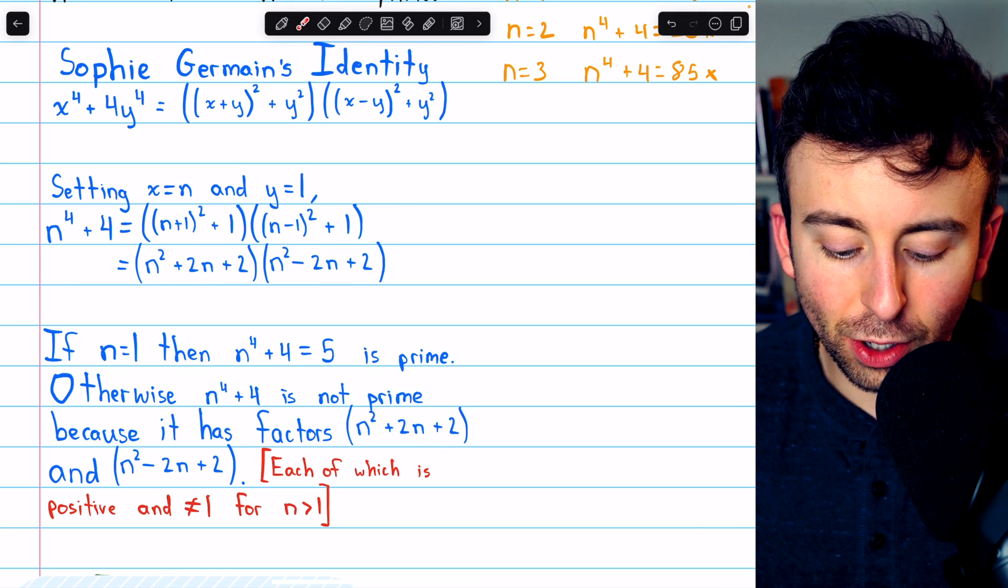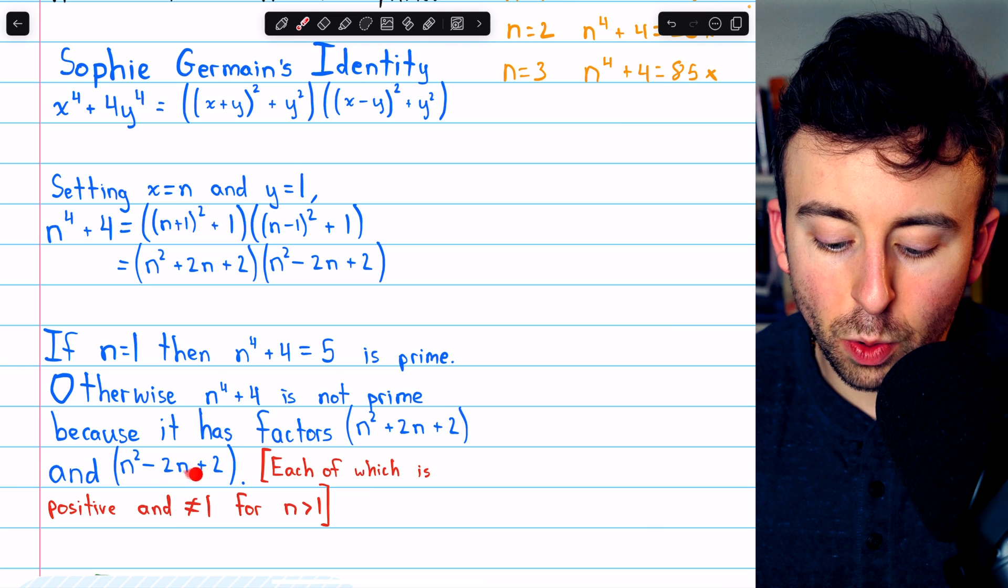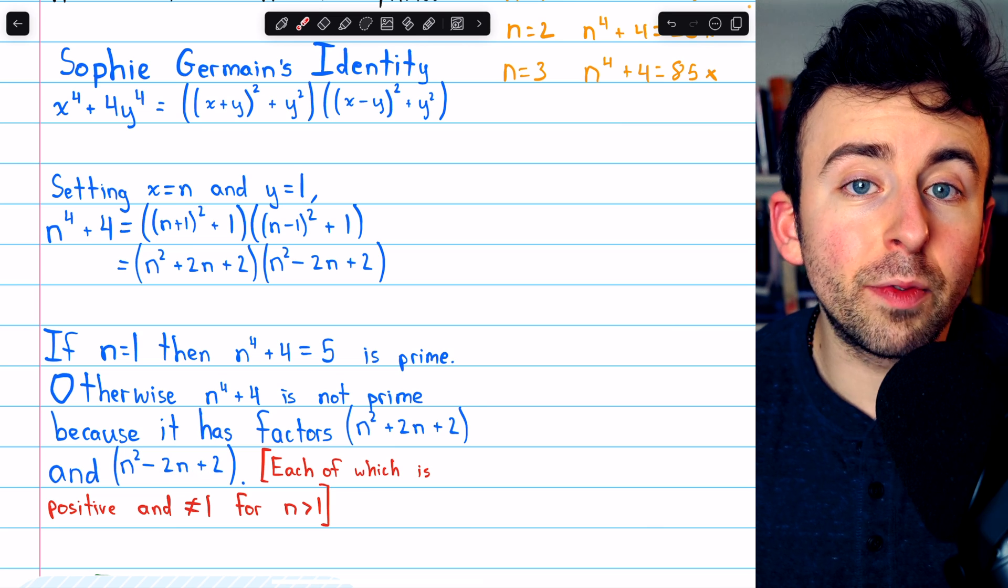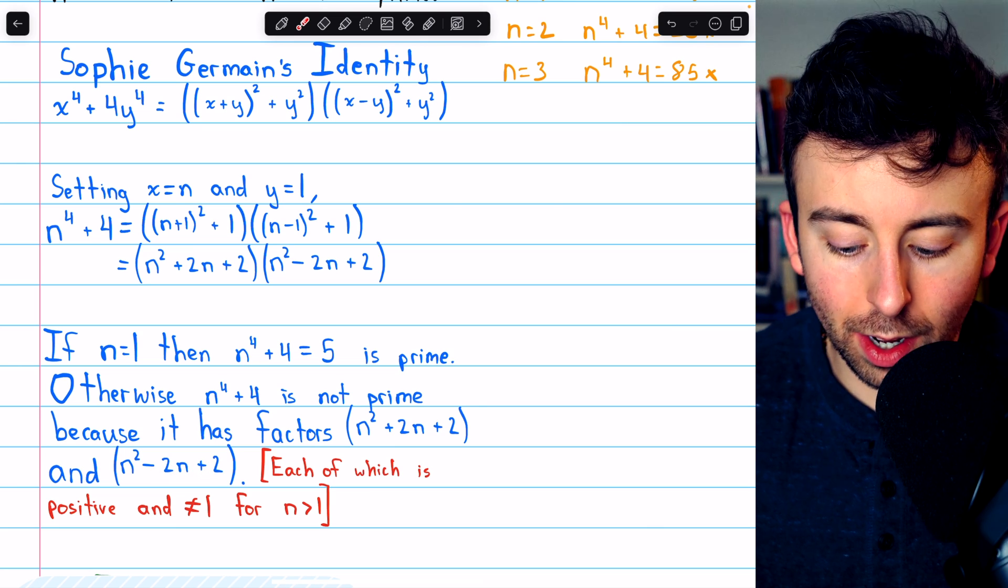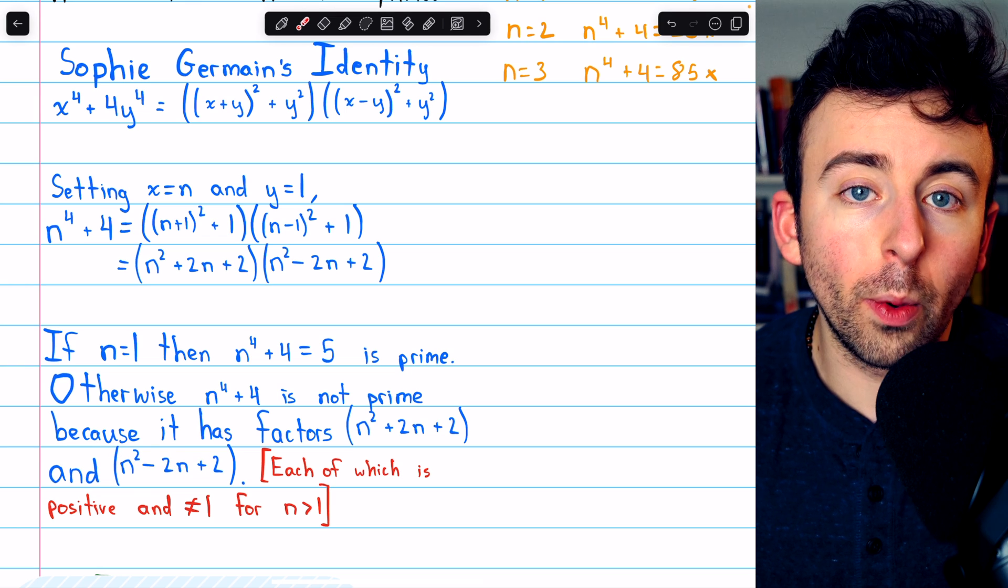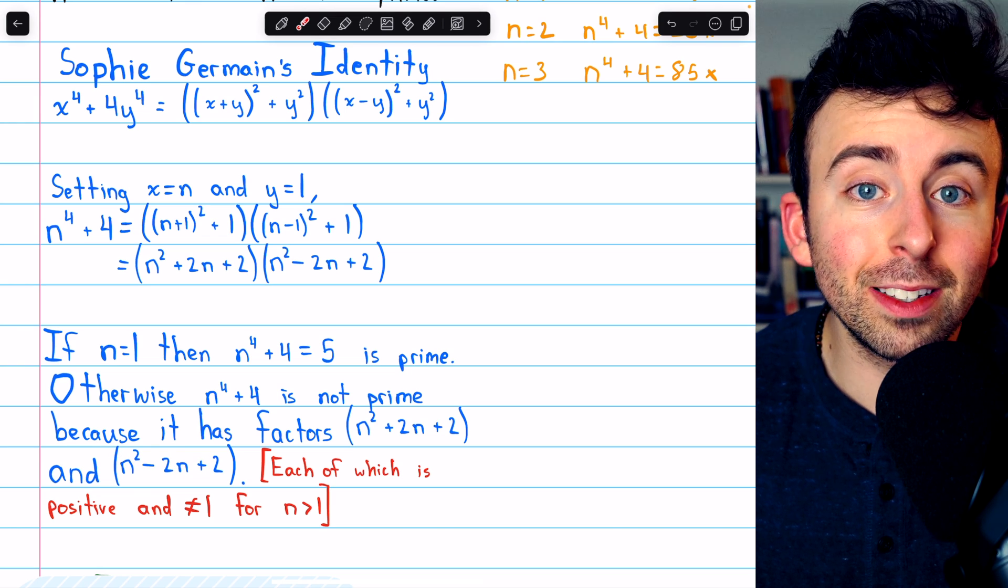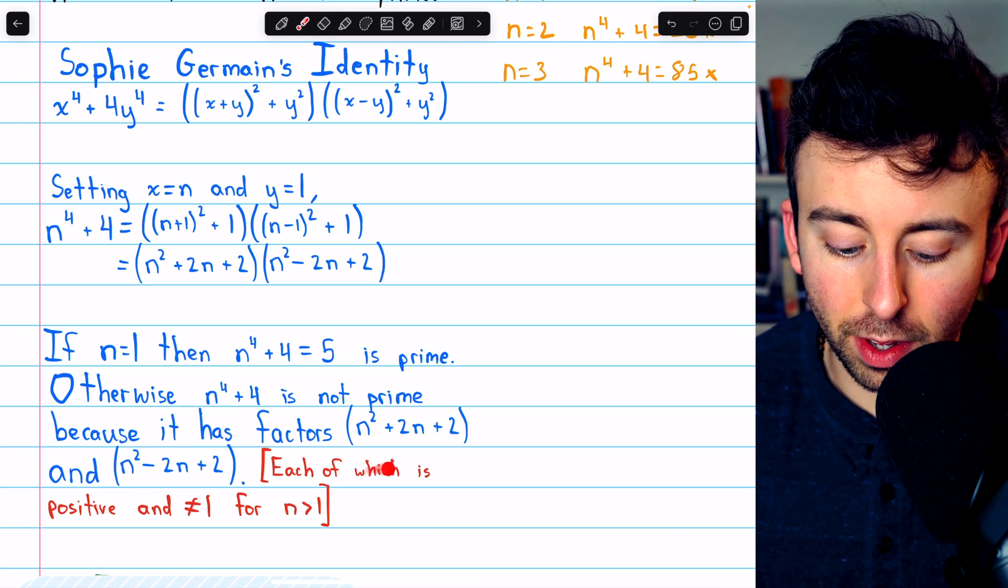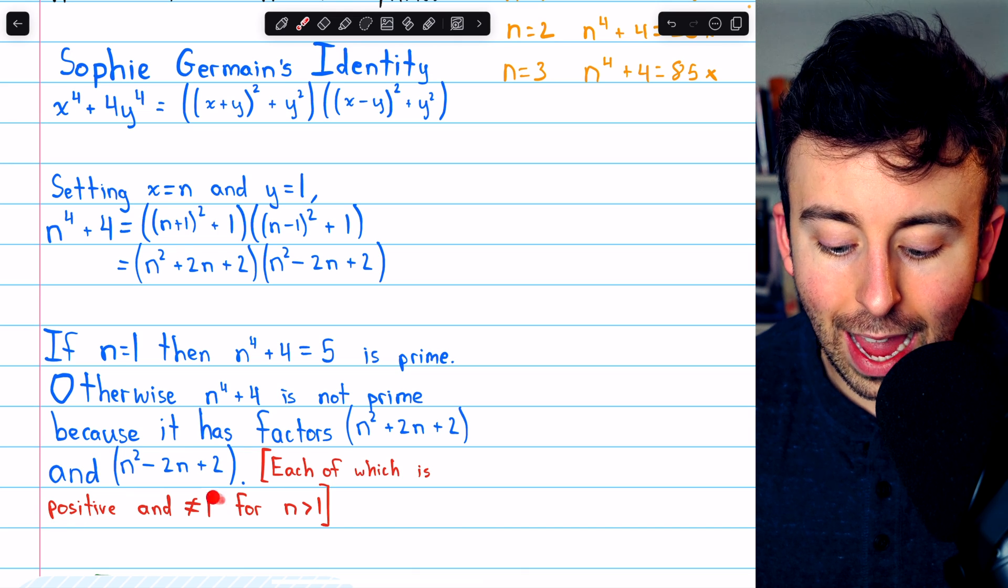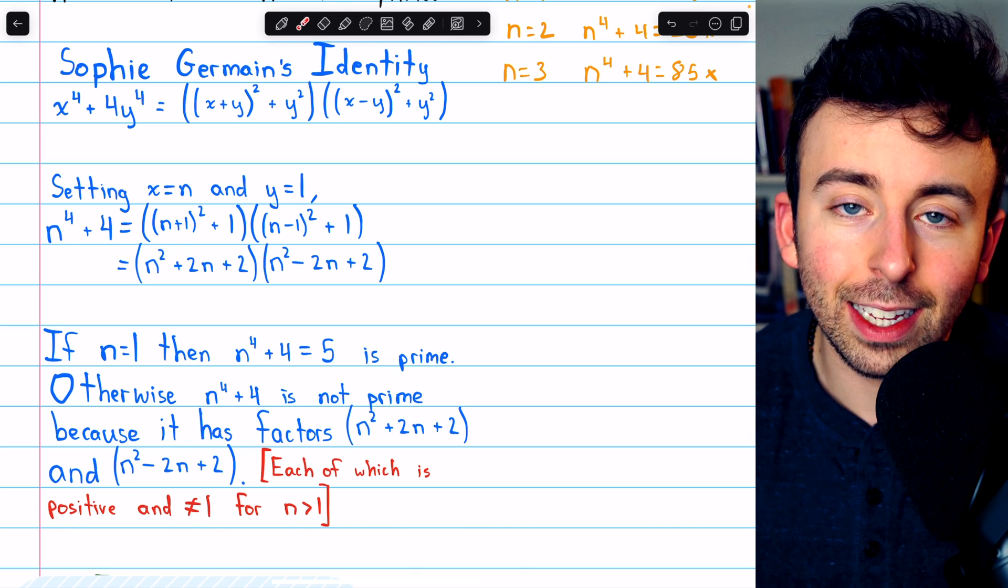n squared plus 2n plus 2, and n squared minus 2n plus 2. For any value of n greater than 1, these two factors are going to show that the number is not prime, because each of these factors is positive and not equal to 1, when n is greater than 1.